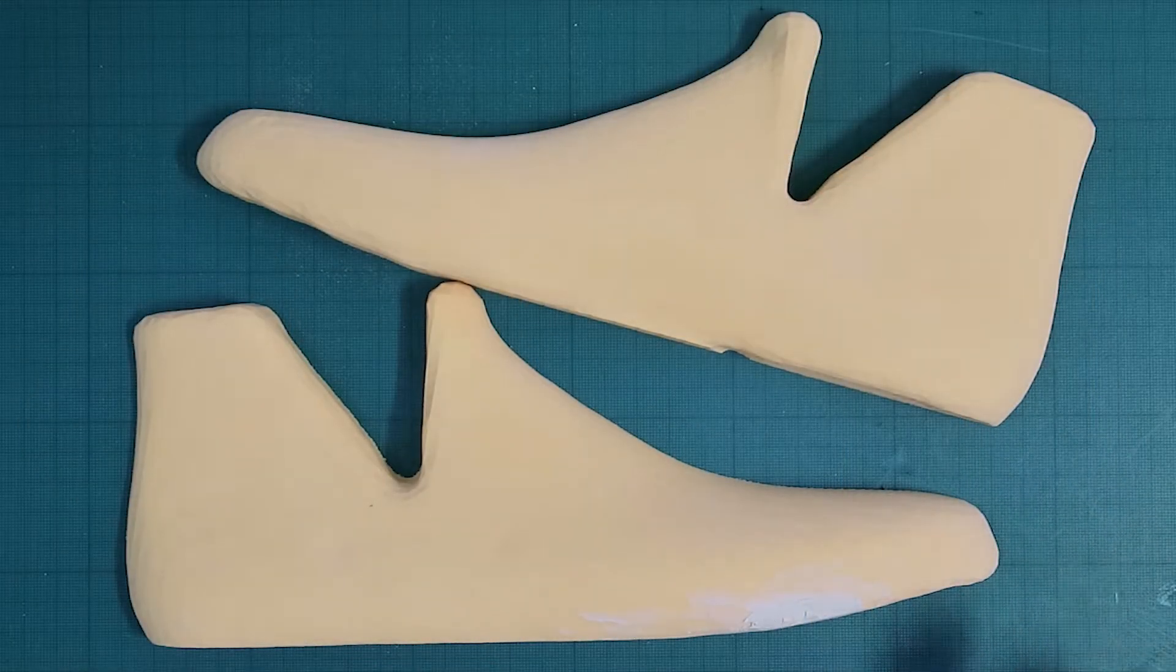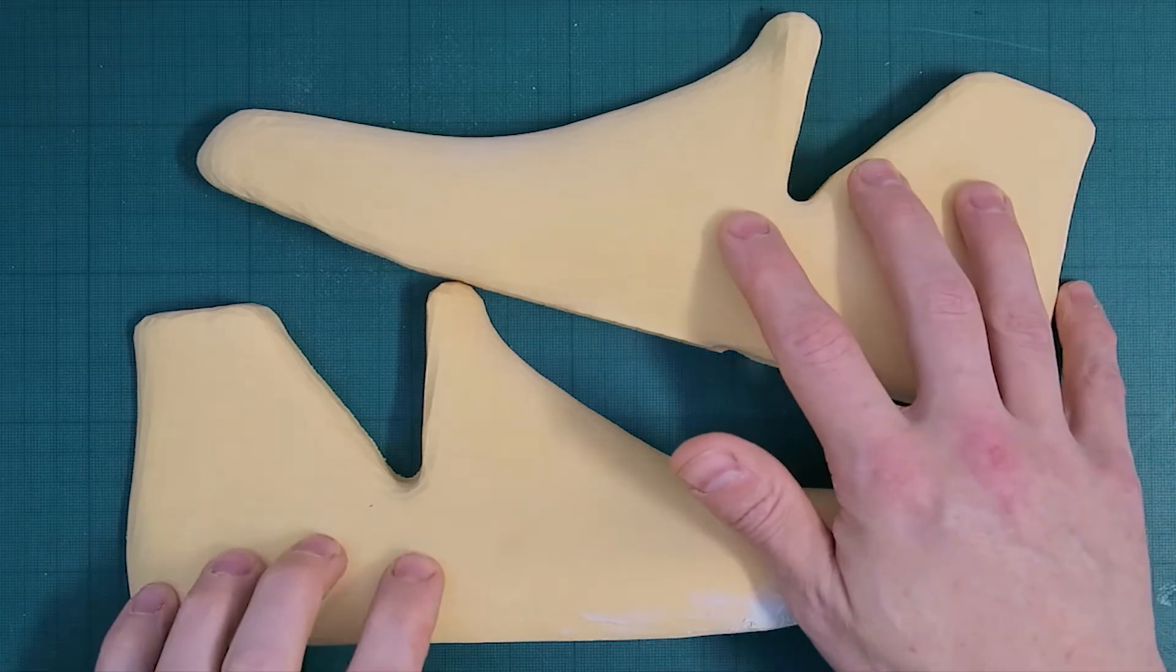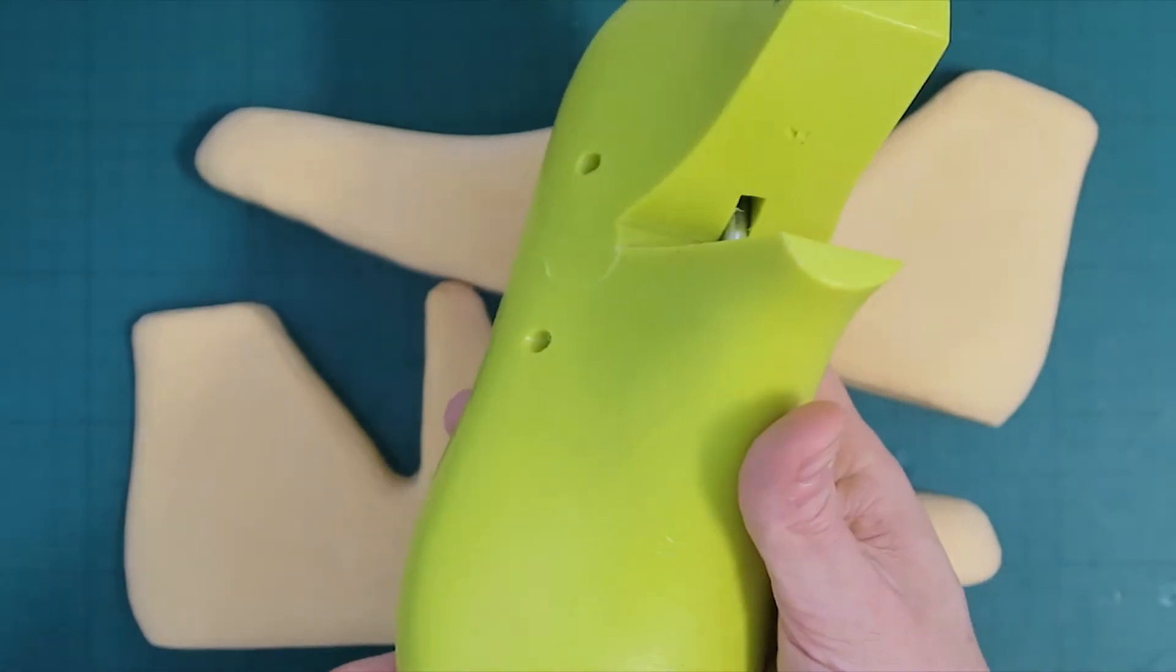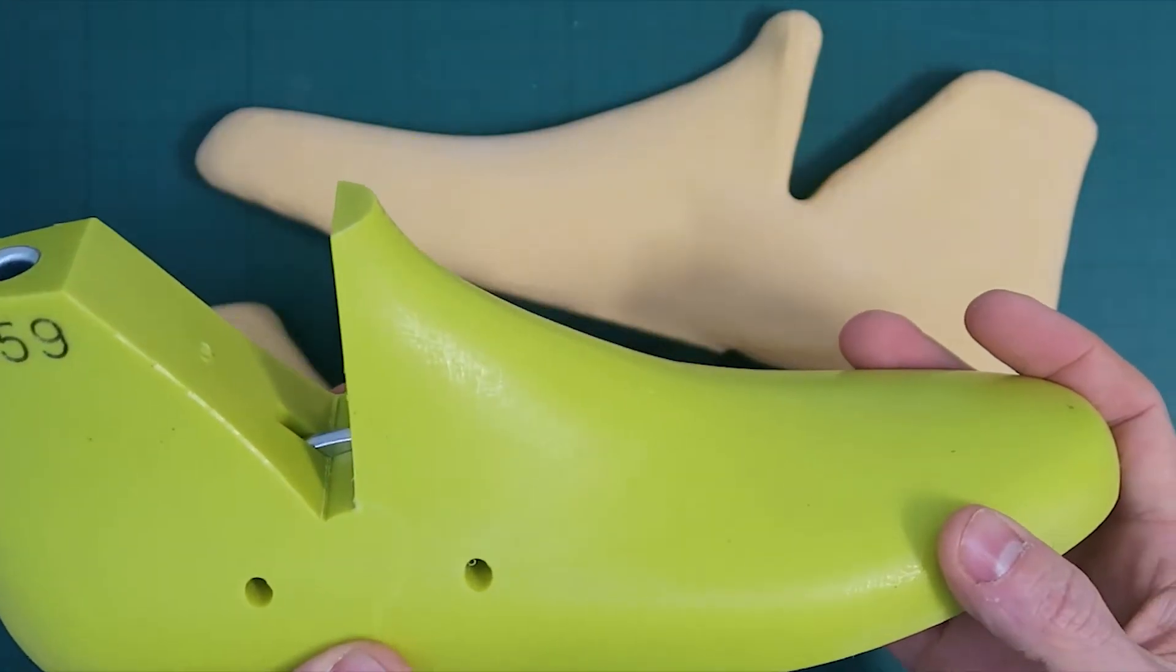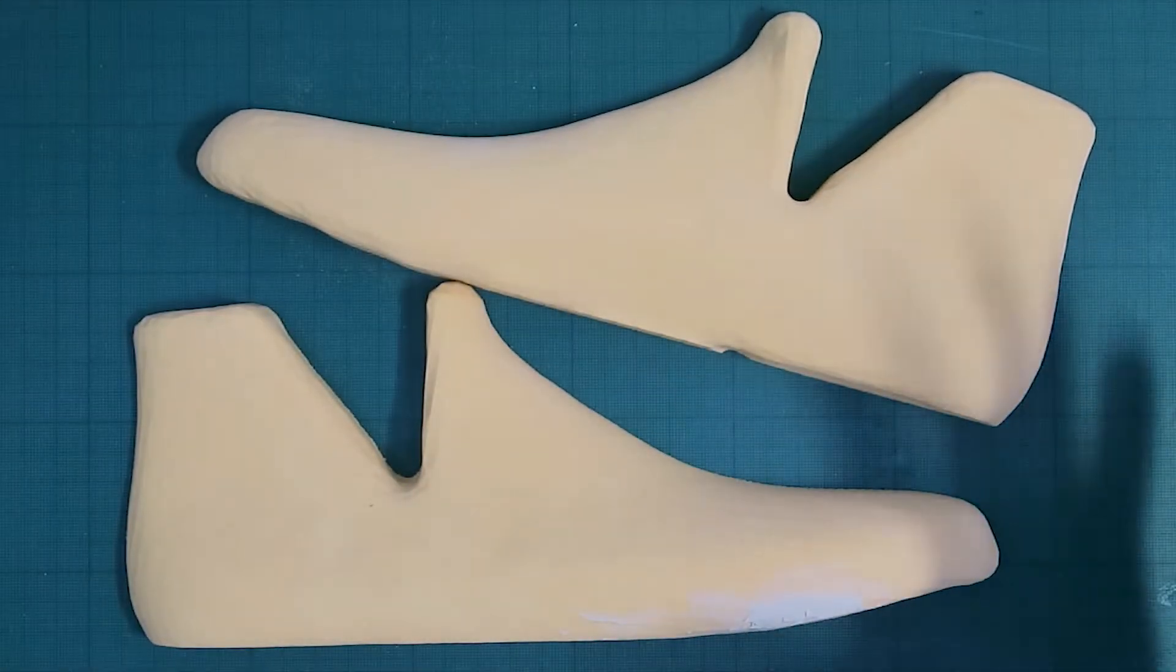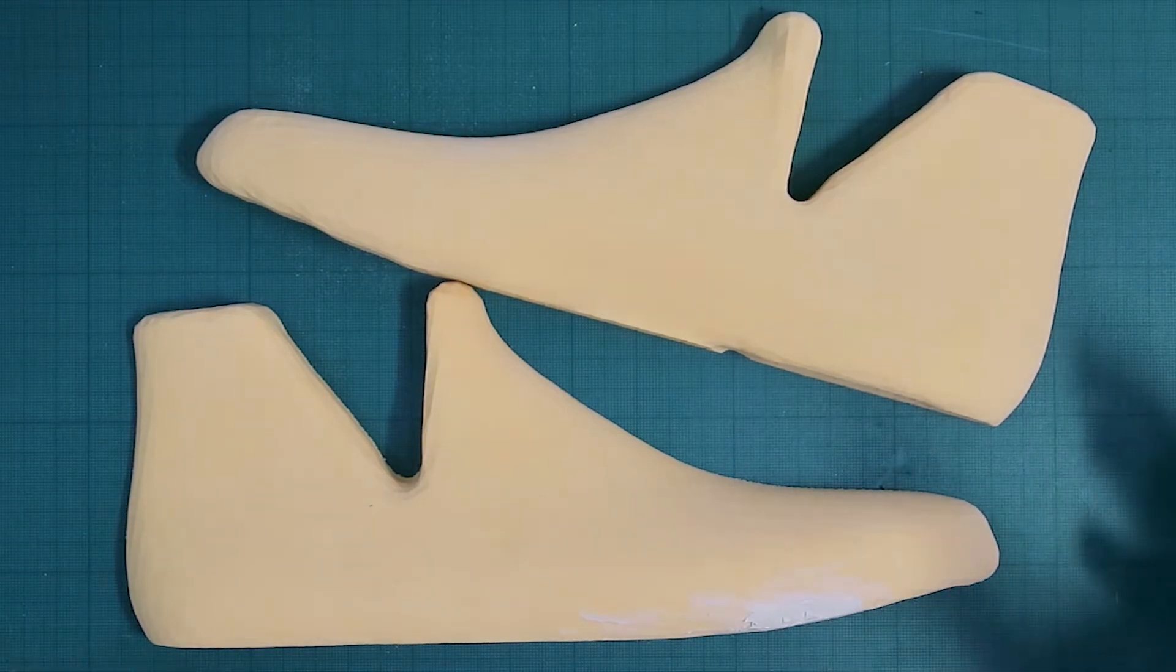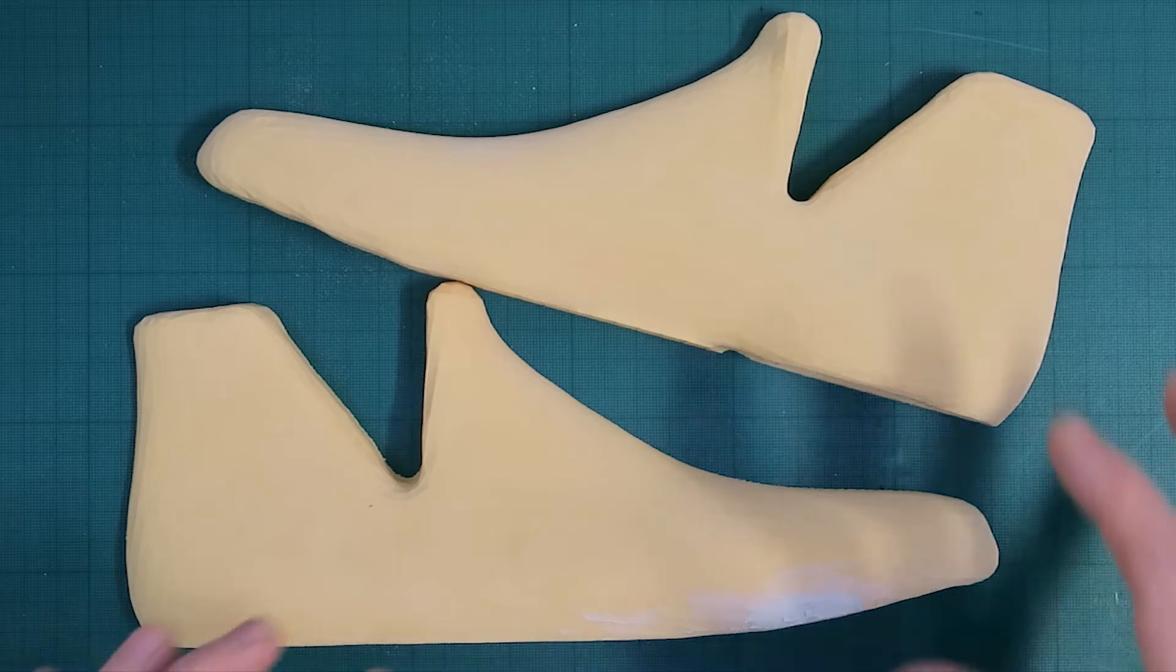What we're covering in this video is lasts from a CNC. What you will have seen in the previous video is how we've taken a last, 3D scanned it, and got it into the computer, edited it slightly in Mesh Mixer, flattened it out using Cura, and got it to the stage where we can CNC route it out.